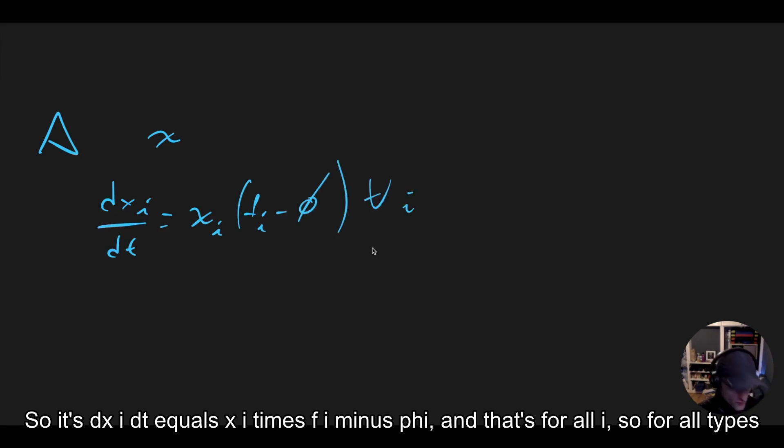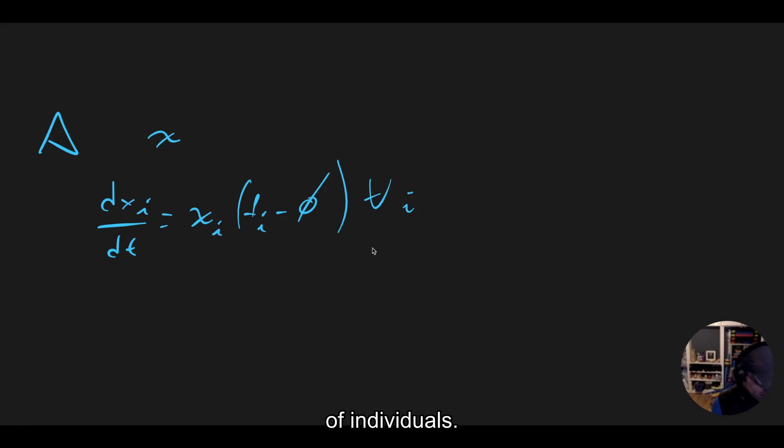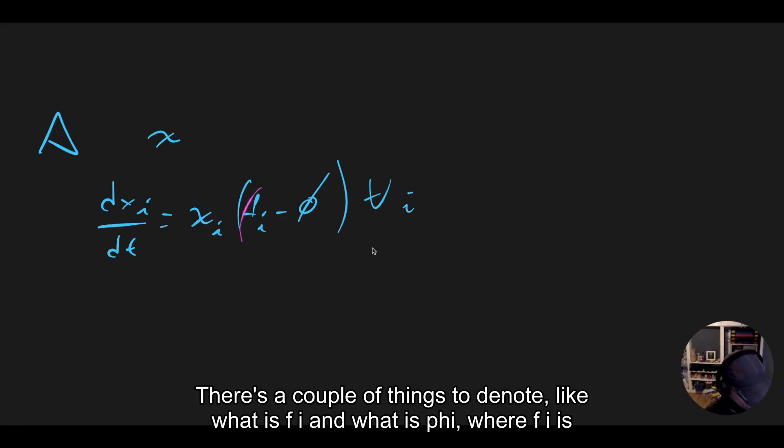So for all types of individuals. There's a couple of things to denote, like what is f_i and what is phi.